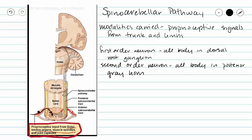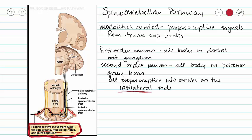The interesting thing about the spinocerebellar pathway is that some of our second order neuron axons do not decussate. Some decussate and then decussate again once they reach our brain stem. So all of our proprioceptive information is going to arrive on our ipsilateral side — meaning it goes to our cerebellum on the same side that it originated.